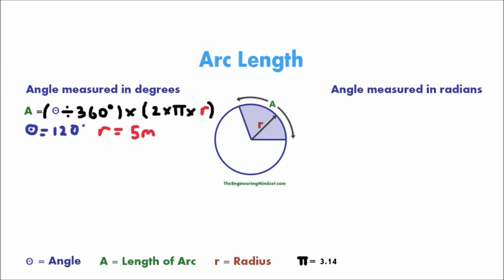120 degrees. And that our radius is equal to 5 meters. Okay. So we'll have 120 divided by 360. That is equal to 0.3333. It goes on and on. But we'll do it to 4 decimal places for now.